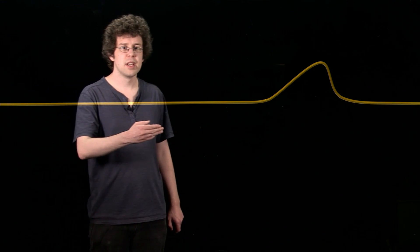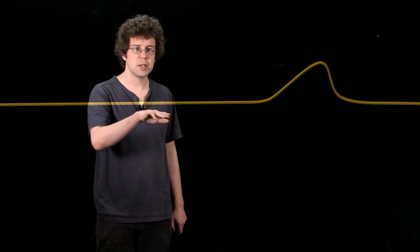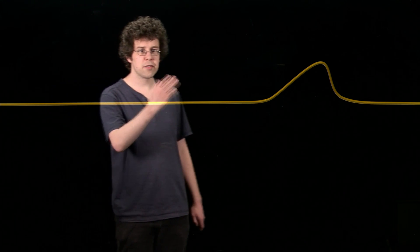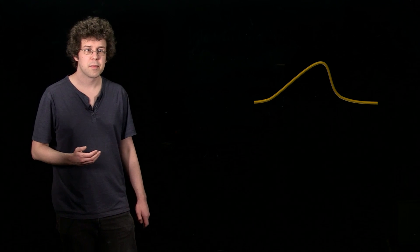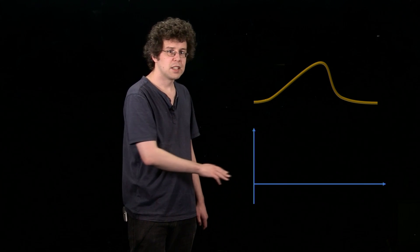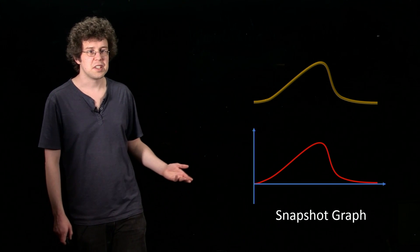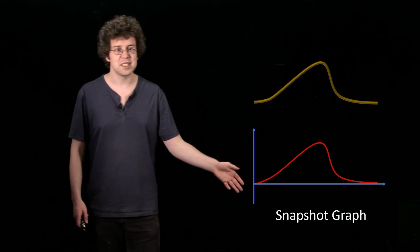I'm going to draw a graph describing how much our medium has displaced from its equilibrium position at some particular point in time. The graph will look exactly the same shape as our rope. The vertical axis is our displacement and the horizontal axis is position along our medium. Where displacement is large, our graph shows large displacement. This is called a snapshot graph, literally because it's a snapshot - we've taken a photo of our wave and slapped axes on it.